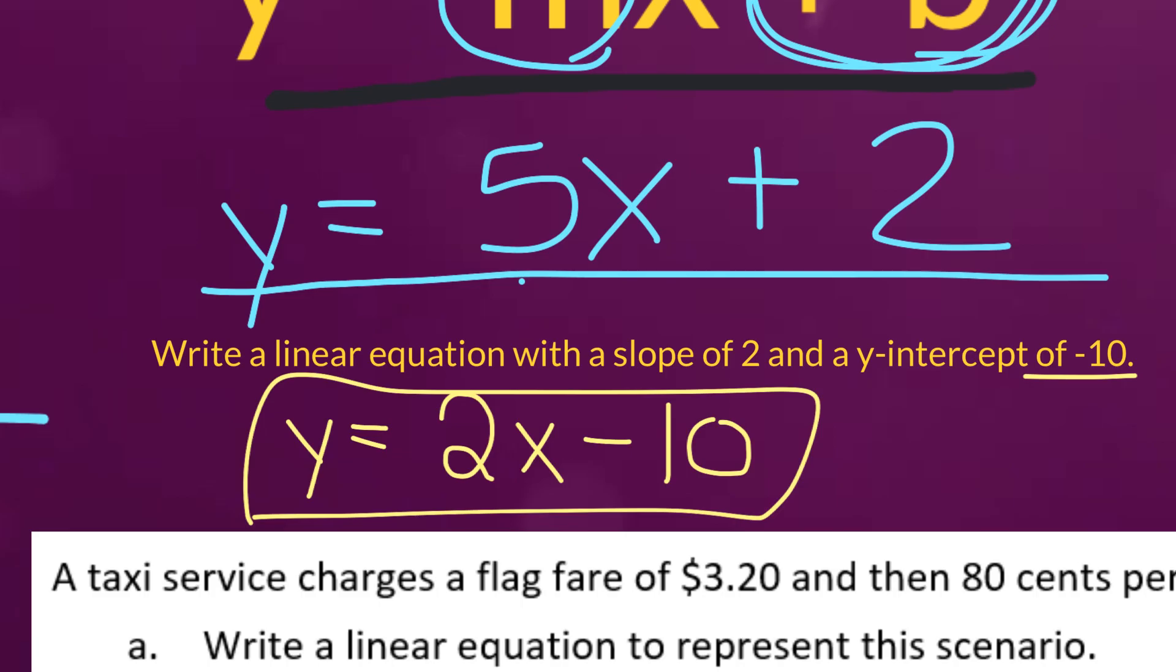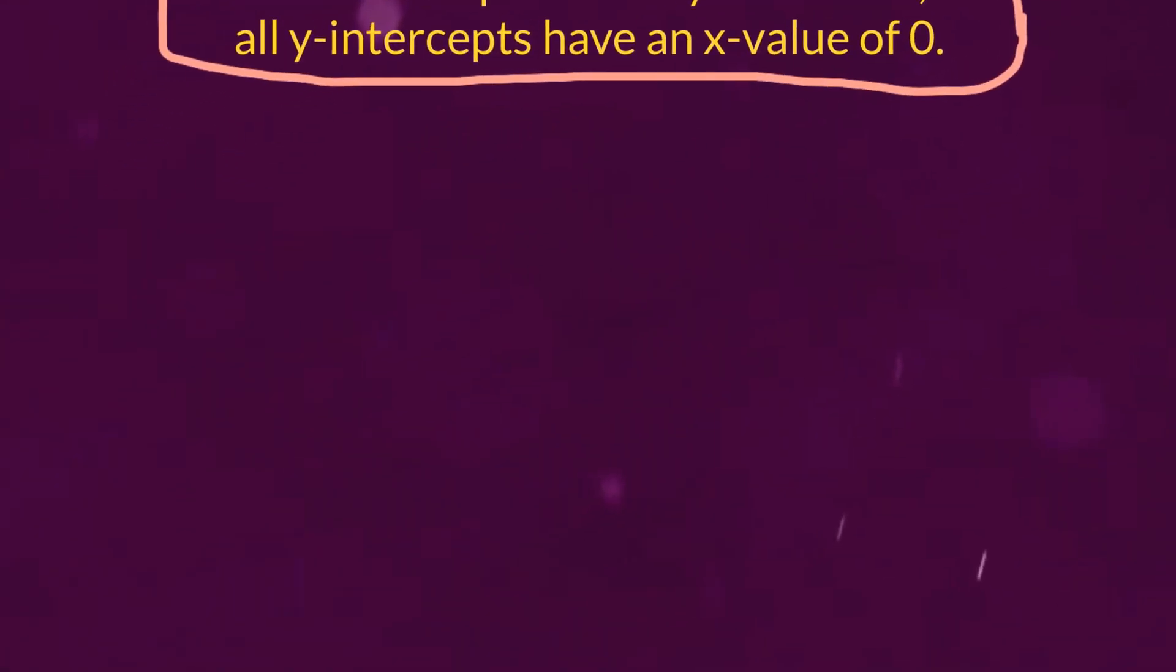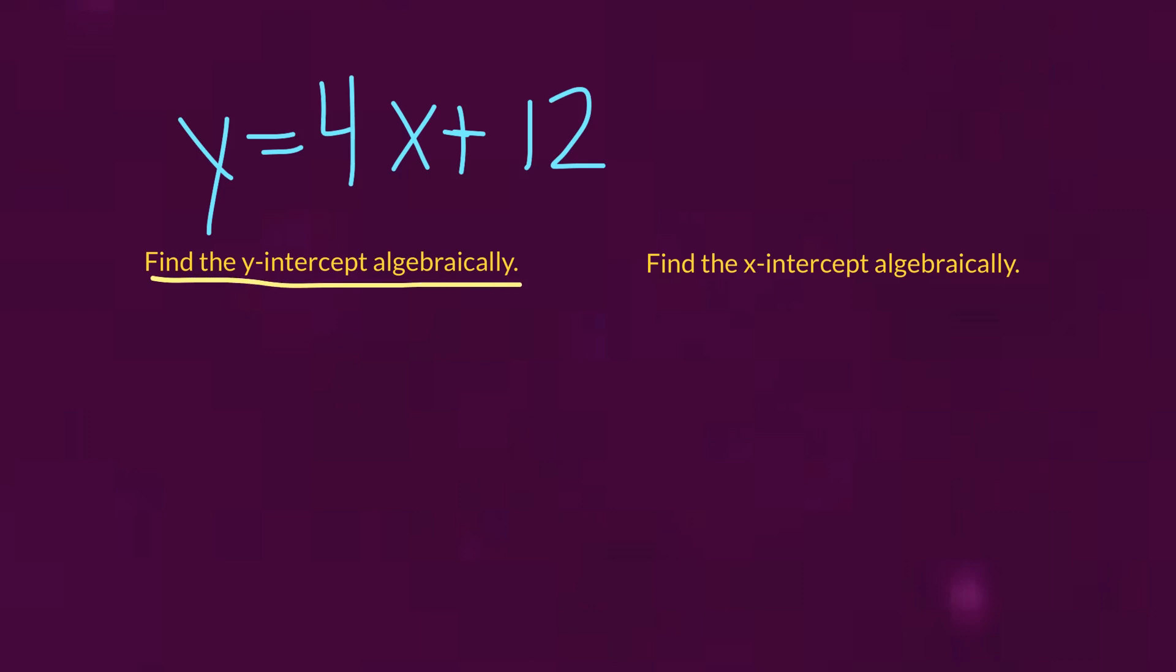Now, the next skill we're going to go over is how to find an x-intercept or a y-intercept if you're not visually looking at it on a graph. Like if you're just given an equation like y equals 4x plus 12. So let's start with looking for the y-intercept. So to solve this algebraically, that means we're going to be using some algebra skills. But the important thing is we need to think, if we're looking for the y-intercept, does that mean x equals 0 or y equals 0?